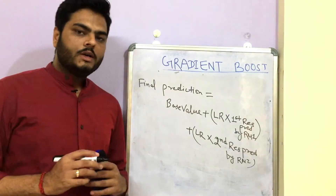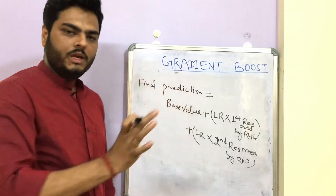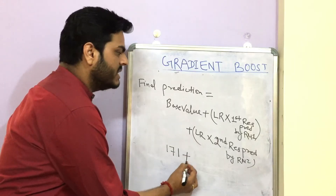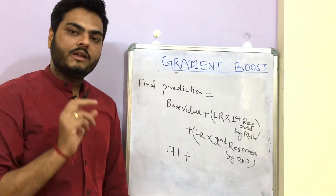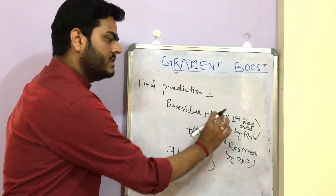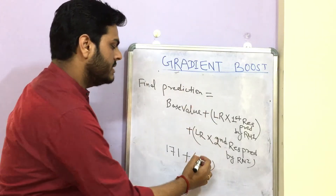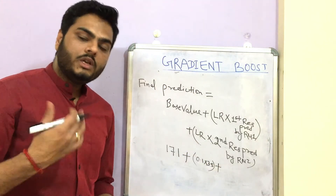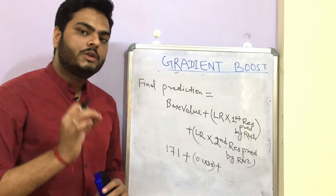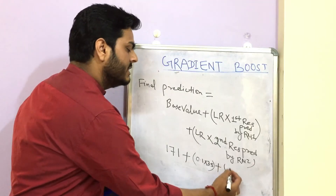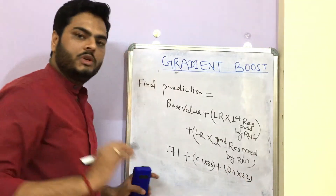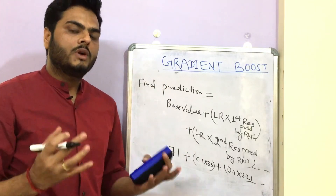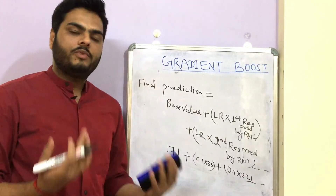The final prediction will look like: base value (171) plus learning rate into first residual prediction by residual model 1 (0.1 × 3.5), plus learning rate into second residual prediction by residual model 2 (0.1 × 3.2), and this continues for however many trees we grow — for example, 100 trees means 100 such terms.